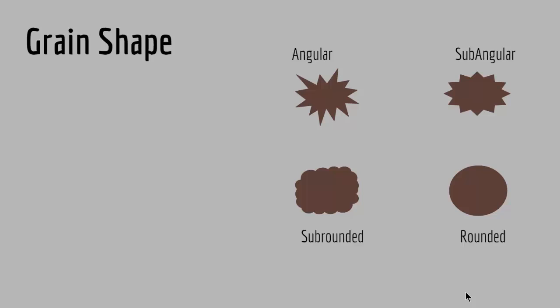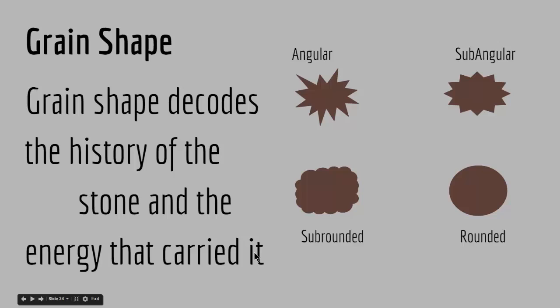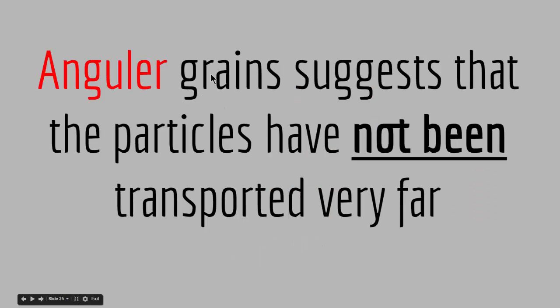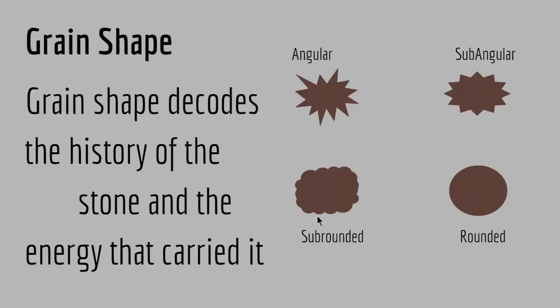Another tool that can tell us about past environments is grain shape. Grain shapes can decode the history of the stone and the energy that carried it. If you have angular grain shapes, that means the grain did not interact much with the environment or did not hit many other rocks, and therefore did not break its angular edges. But as a rock moves through water or wind, it hits other rocks and gradually starts to lose its angular sides. Therefore angular grains suggest that particles have not been transported very far. If you have grains that are extremely round, that means the depositional environment is away from the source and the grains have traveled a great distance.